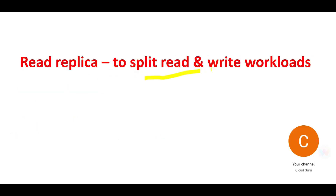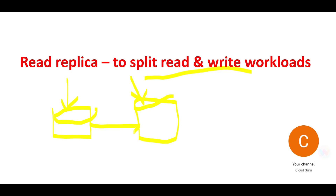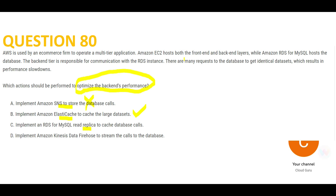Option C says use Read Replica. You use Read Replica when you want to split read and write operations — you create a primary database and a replica, routing reads to the replica and writes to the primary with replication between them. There is no use case here that asks you to split reads and writes — this question is only about reads. So we strike this out.